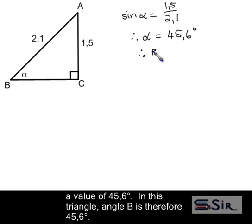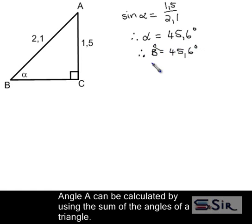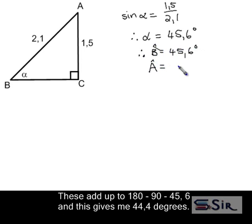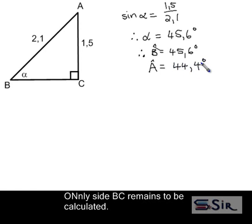In this triangle, angle B is therefore 45.6 degrees. Angle A can be calculated by using the sum of the angles of a triangle. These add up to 180 degrees, minus 90, minus 45.6 degrees, and this gives me 44.4 degrees.